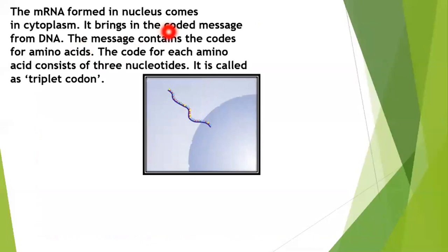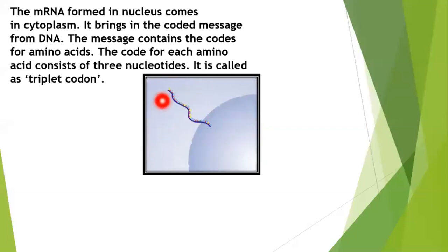The mRNA formed in the nucleus comes into the cytoplasm. This part is the nucleus, and the outer part is the cytoplasm. The mRNA is leaving the nucleus and entering the cytoplasm. It brings a coded message from the DNA — a message for protein synthesis.